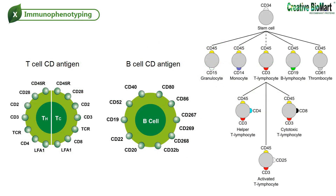Most CD antigens, however, are expressed at varying levels by many different cell types. Rather than the exclusive expression of a single CD antigen with a particular cell type, it is the peculiar constellation of surface antigens expressed by a given cell that helps assign it to a particular lineage or sublineage of cells. Increasingly, the resolution of many important cell subpopulations requires two or more color multi-parameter flow cytometric analyses.